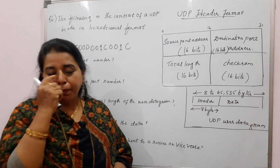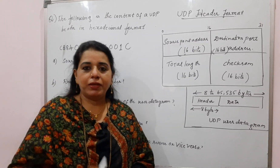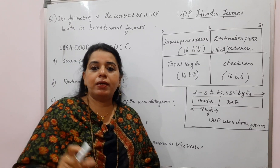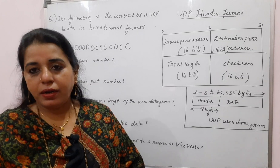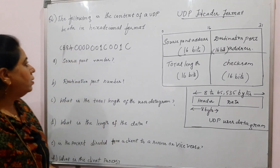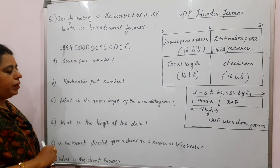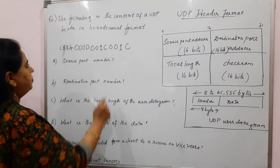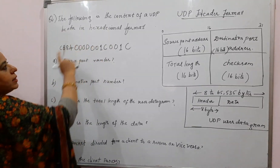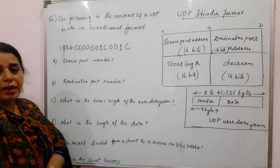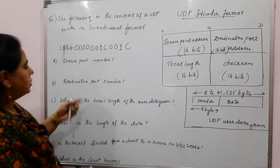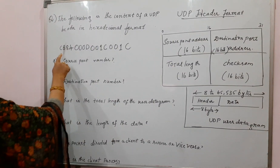In my previous video session, I also explained what the maximum value of the data in a UDP user datagram should be. Now, the question is: the following is the content of the UDP header in hexadecimal format — and this is the given question.